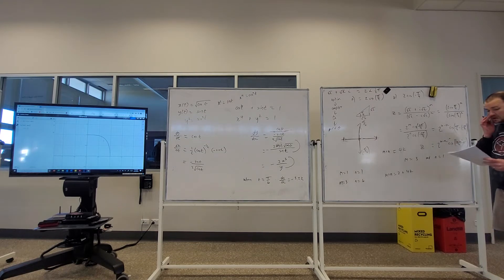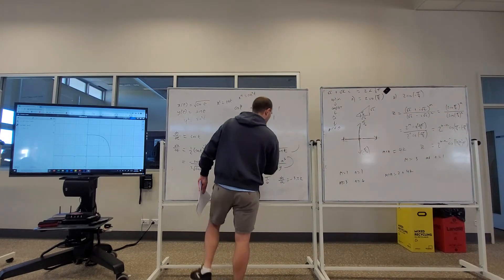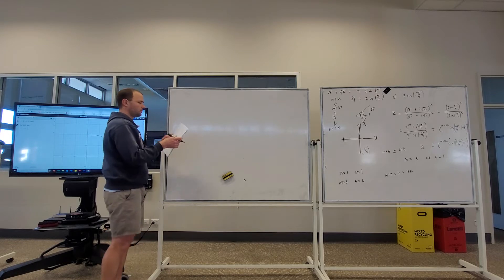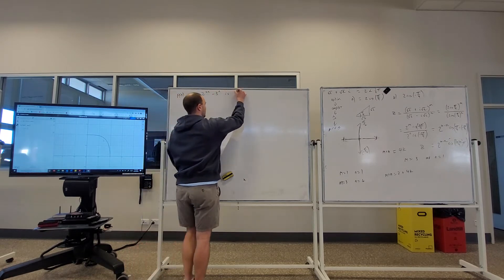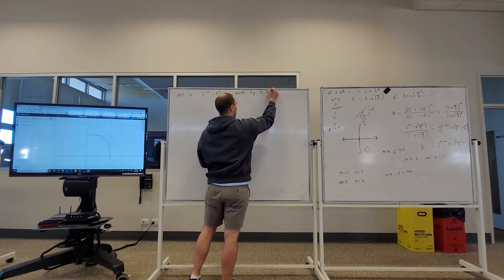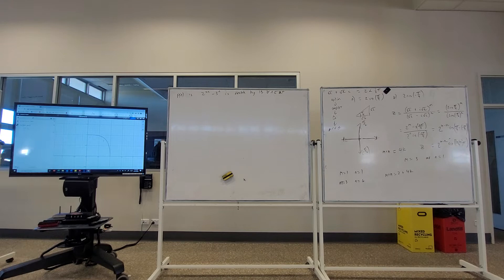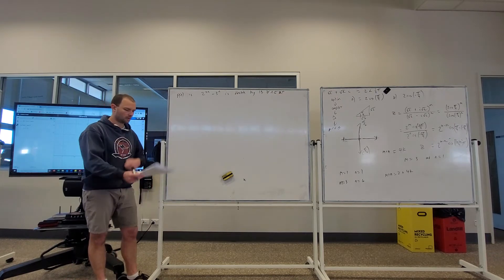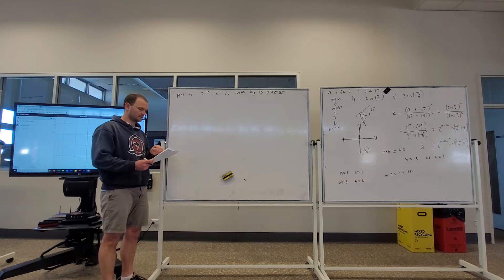We have a PMI question — a divisibility one. Let P(n) be the proposition: 2^(4n) − 3^n is divisible by 13, for all positive integers. We state the proposition so we can refer to P(n) later without rewriting the full statement. The steps are: state, test, assume, prove, explain.